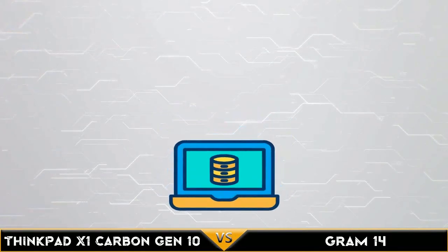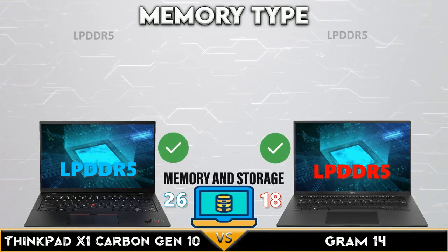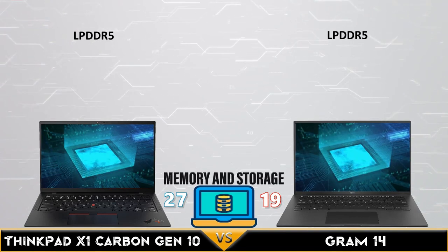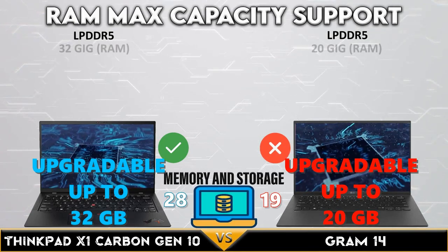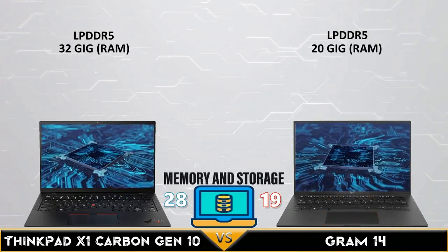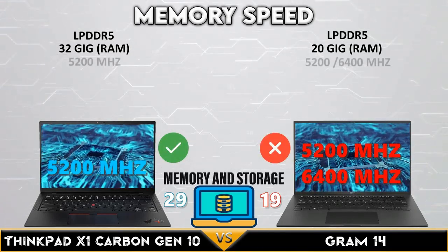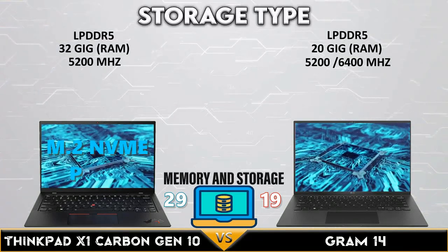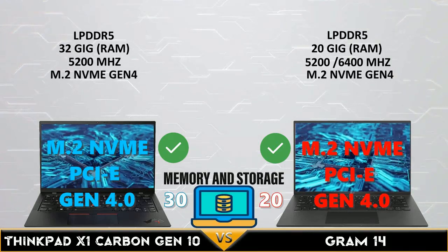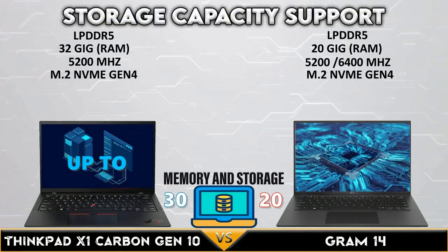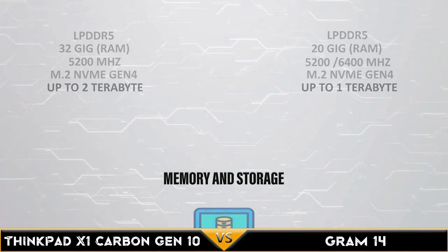Now let's move into the memory and storage comparison. Both devices support LPDDR5 memory. The Carbon Gen 10 supports up to 32GB of RAM and has higher memory speed. Both support NVMe Gen 4 storage, and the Carbon supports up to 2TB of NVMe storage.